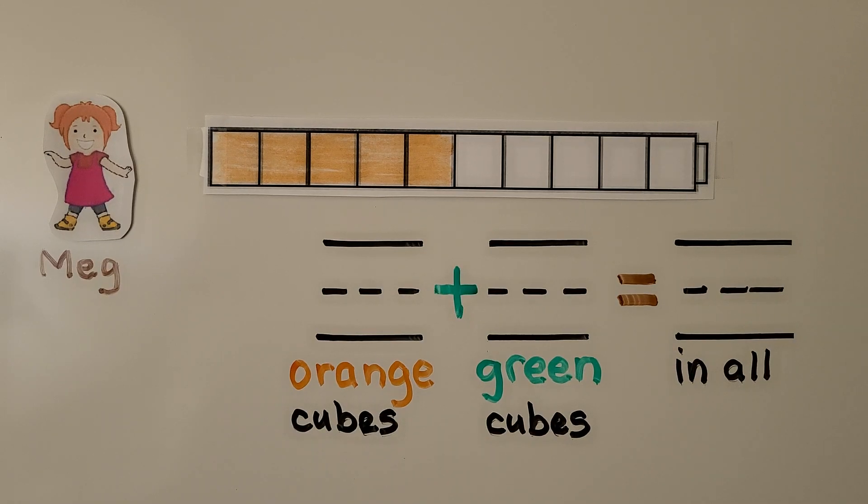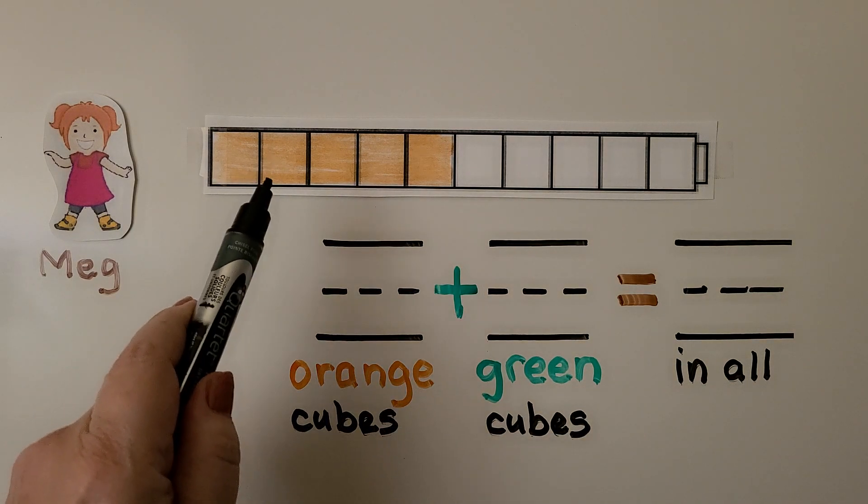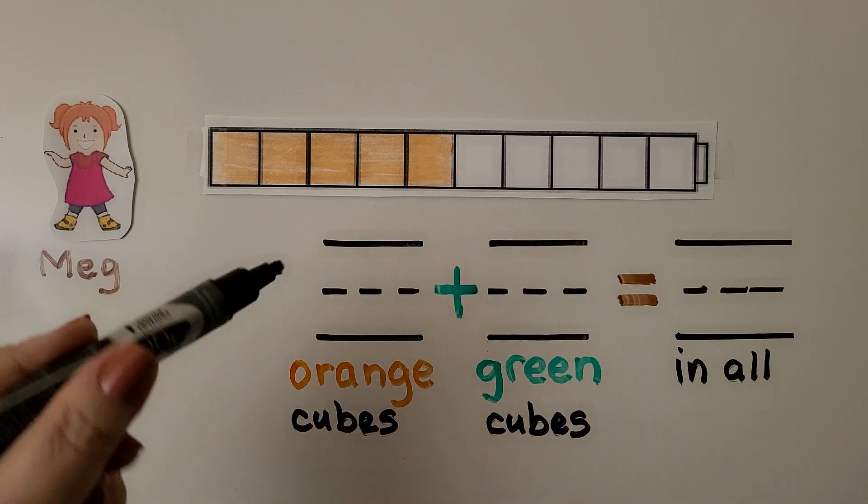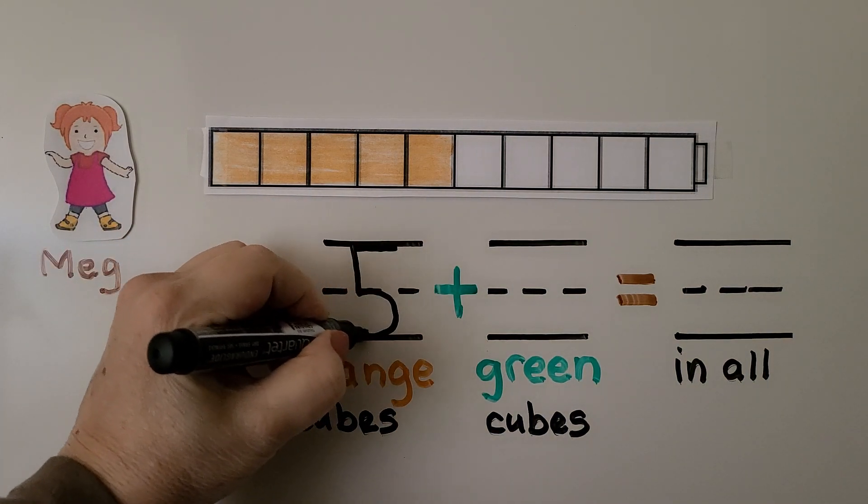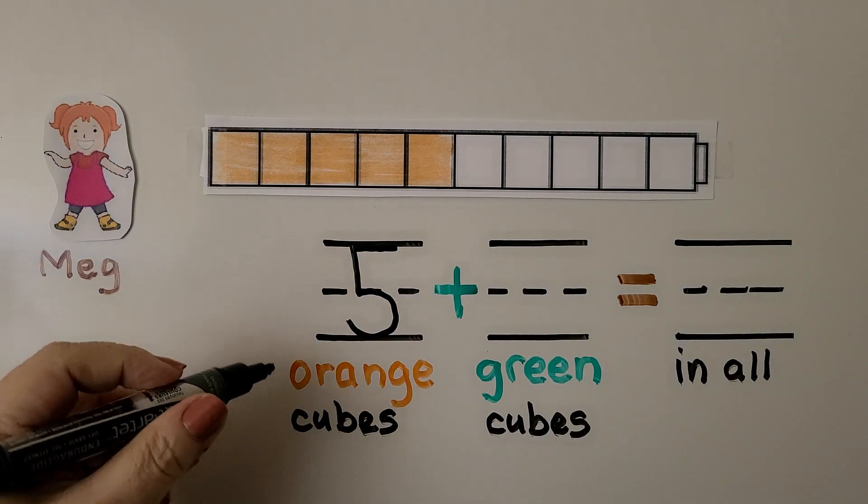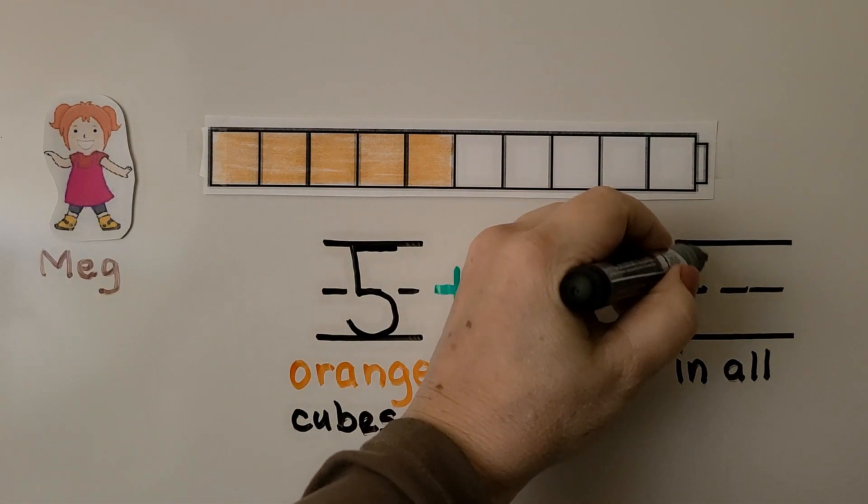Meg made a cube train with 10 cubes. Five are orange and the rest are green. How many green cubes do we need to color to make 10? We know she has one, two, three, four, five that are orange. We can write the 5 here. This is where we write the number of orange cubes. We know she has 10 in all.